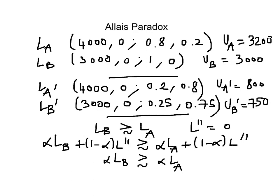Now, you will notice that if I pick alpha equal to 1/4, alpha times Lottery B is actually equal to Lottery B', because it's the same outcome with a probability 25%, which is 1/4 of 1. And similarly, alpha times Lottery A is actually equal to Lottery A', because it's the same outcome, but now the probability 20% is 1/4 of 80%.